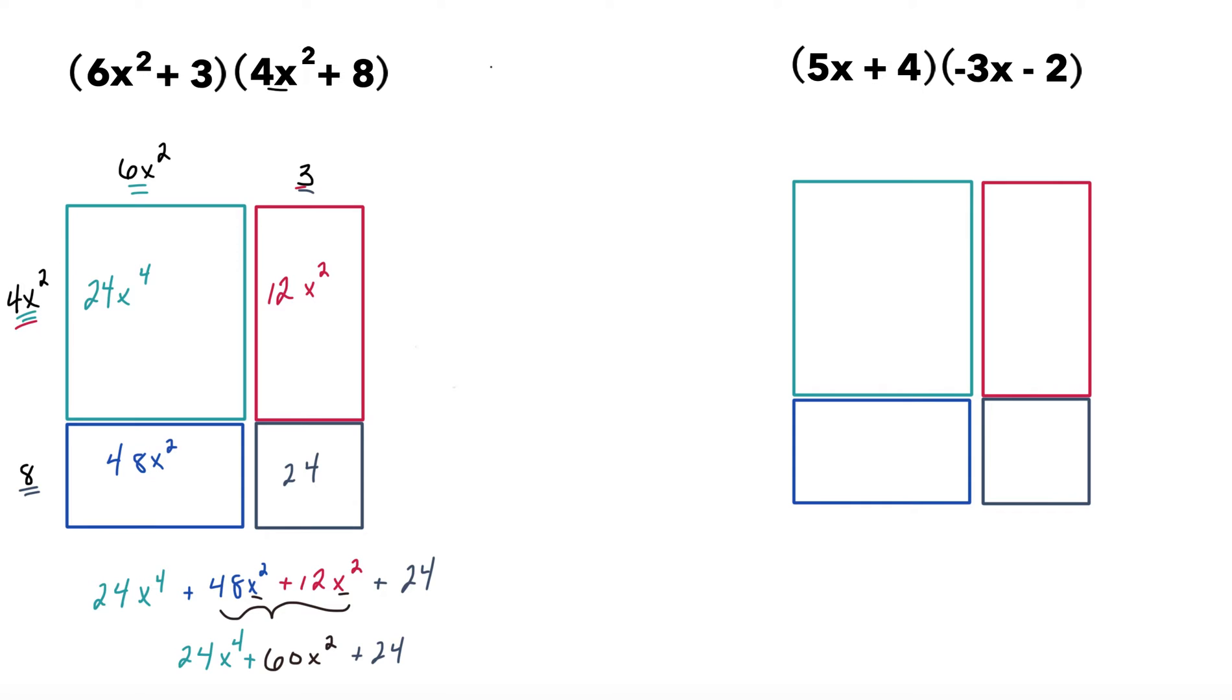So there you have it. That is how to write the answer of an area model. I can circle our final answer right here. Now, it's written as a trinomial, meaning we have three terms. The greatest term is x⁴, so if we were being technical, this is a fourth degree trinomial. And it is found by using an area model method.